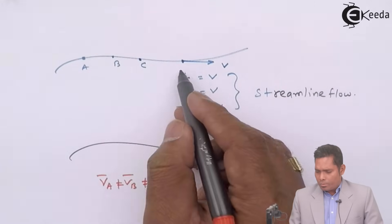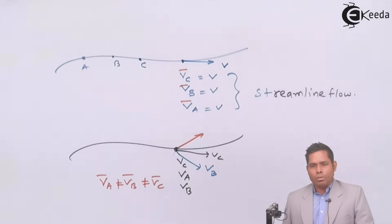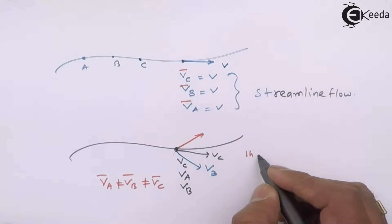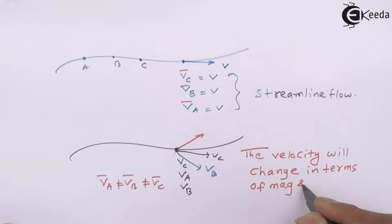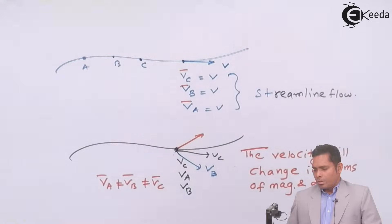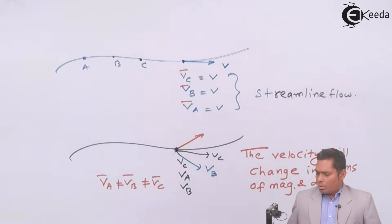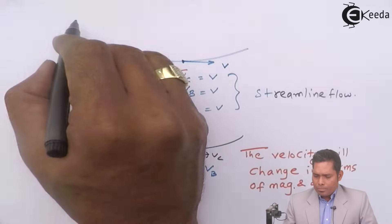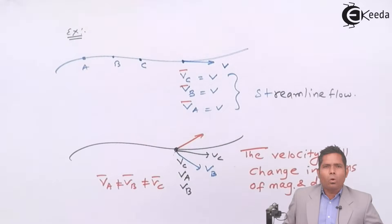So the velocity will change both in terms of magnitude and direction, and they are not equal in terms of magnitude and direction. The velocity will change, and that type of flow is called turbulent flow.